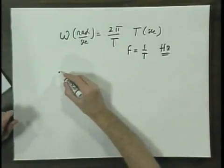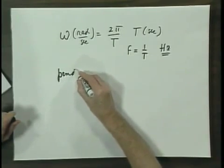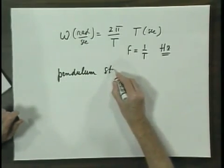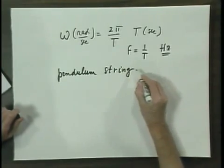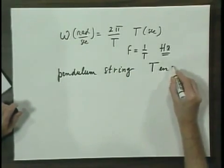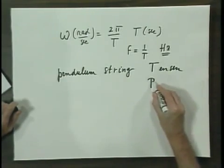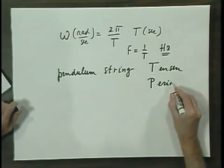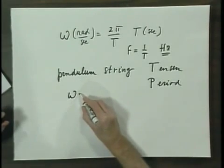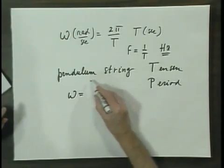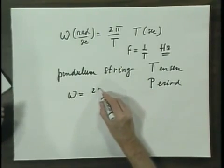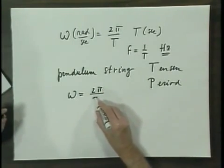So in the case that we have a pendulum with a string, I will reserve T for tension and P for period. So now omega, the angular frequency of the pendulum with a string and a bob, will be 2 pi divided by P. Now there are pendulums where there is no string, and then there is no tension, and then of course I will use capital T for the period.